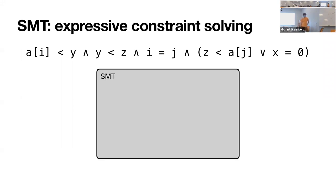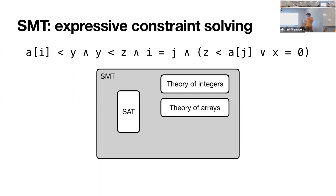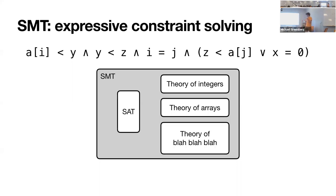For users of SMT solvers, normally this is a monolithic experience — you just put your formula in and it produces an answer. But on the inside they're actually modularized in a really nice way. Typically they have a SAT solver in the core doing Boolean satisfiability, and then there are different modules for each theory. You have a theory of integers that tells you how to reason about integers, a theory of arrays, and essentially anything you want as a theory could potentially be plugged in.